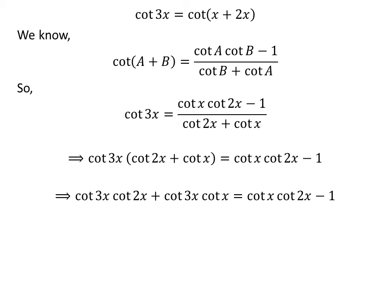Stated multiplication gives us: cotangent of 3x times cotangent of 2x plus cotangent of 3x times cotangent of x is equal to cotangent of x times cotangent of 2x minus 1.